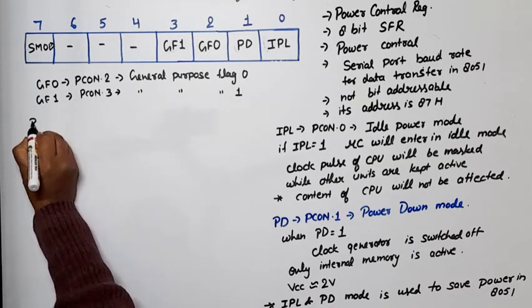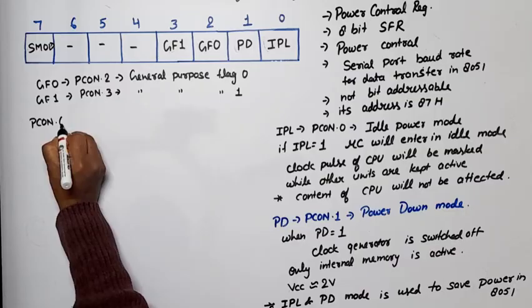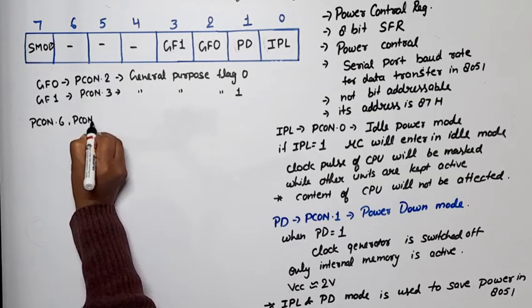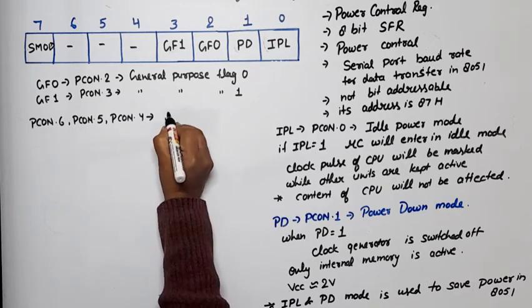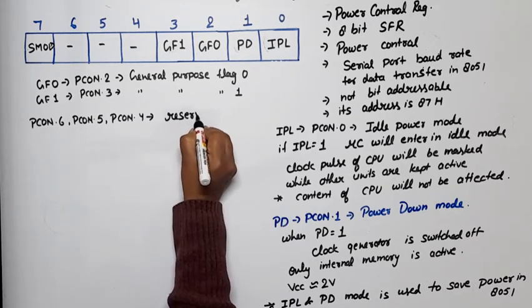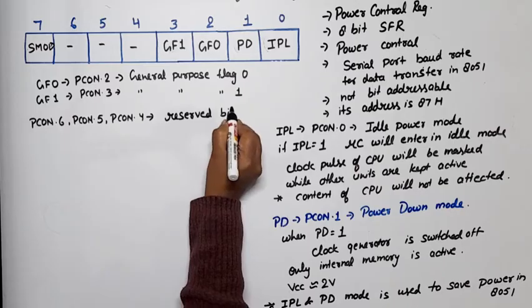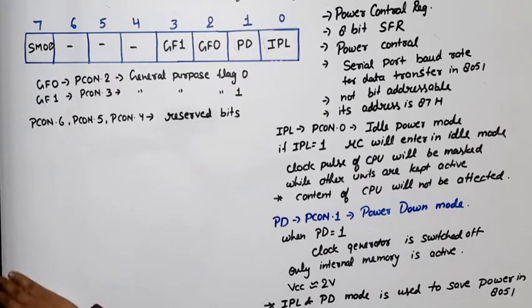Now bit number PCON dot 6, PCON dot 5, and PCON dot 4, these bits are reserved bits. These we generally take as don't care or we put 0.